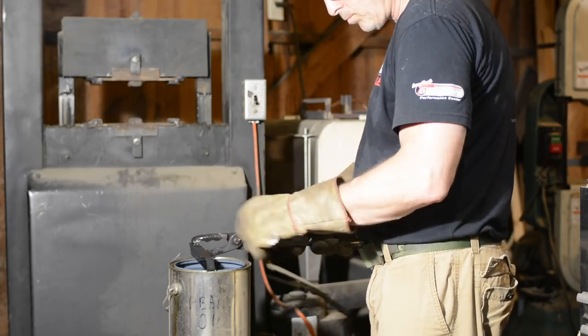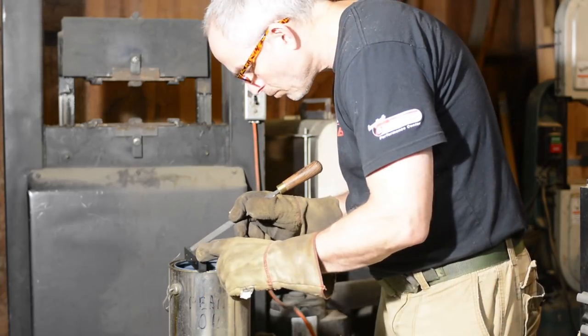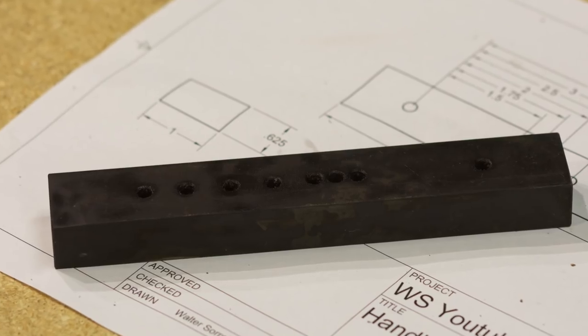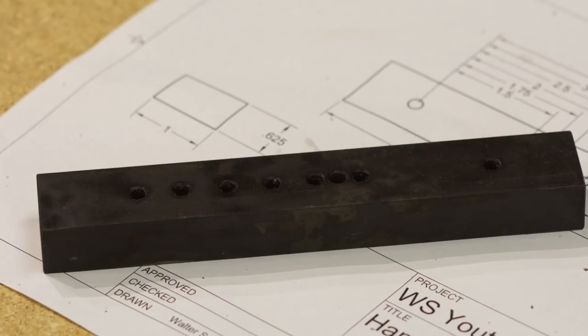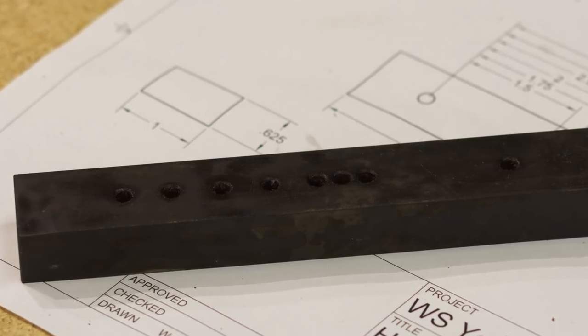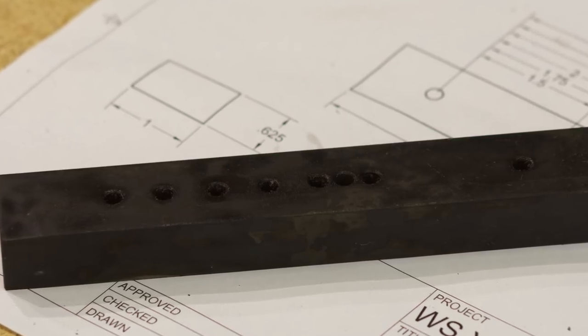After the quench, I test it with a file to make sure the quench was successful. Yep, it's screaming hard. So now it's into the tempering oven at 350 degrees for a couple of hours. This will reduce the glass-hard brittleness of the guide, turning it into a fully functional tool.